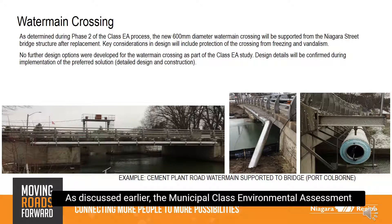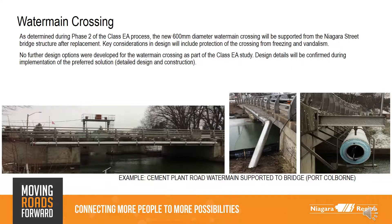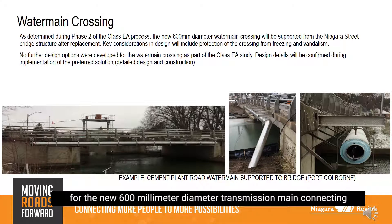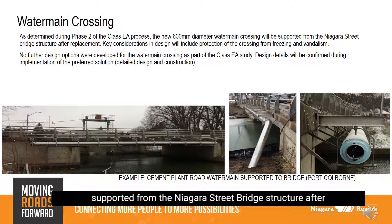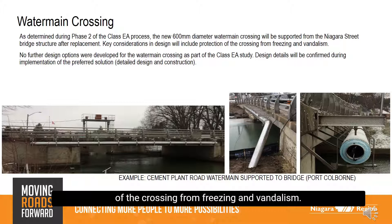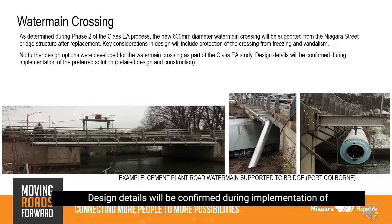As discussed earlier, the Municipal Class Environmental Assessment study also reviewed and evaluated various water main crossings for the new 600-millimeter diameter transmission main connecting the existing mains at Riverbank and Mill Street. As determined during Phase 2 of the Class EA process, the new 600-millimeter diameter water main crossing will be supported from the Niagara Street bridge structure after replacement. Key considerations in design will include protection of the crossing from freezing and vandalism. No further design options were developed for the water main crossing as part of the Class EA study; design details will be confirmed during implementation, including detailed design and construction.